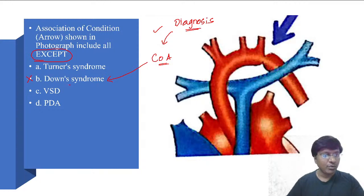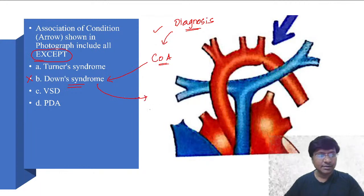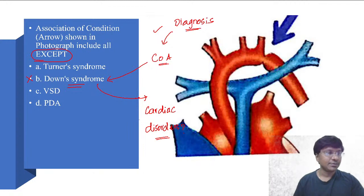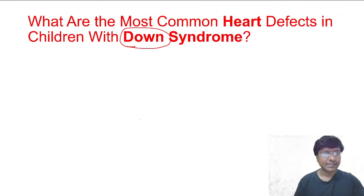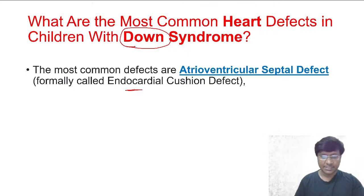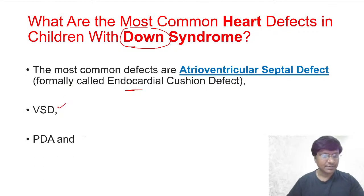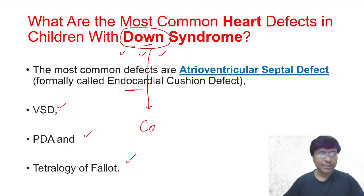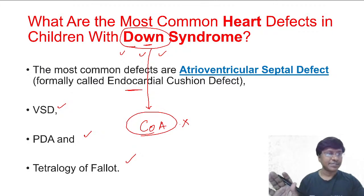What are the cardiac problems in Down syndrome? Number one: endocardial cushion defect, that is atrioventricular septal defect — one of the very important cardiac disorders associated with Down syndrome. Apart from that, there can be VSD, PDA, and tetralogy of Fallot. These are the heart defects seen in patients with Down syndrome. But these patients do not have coarctation of the aorta.